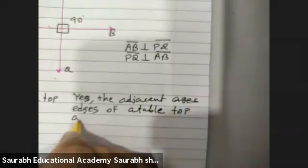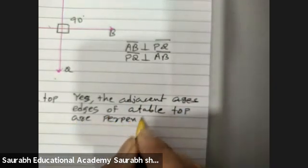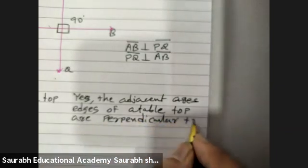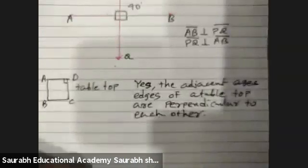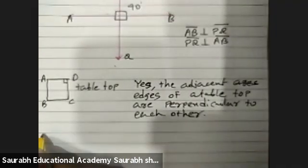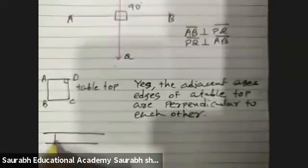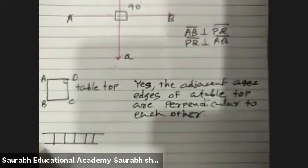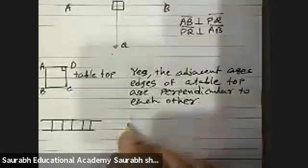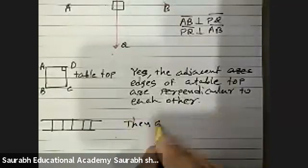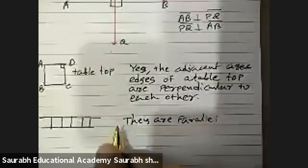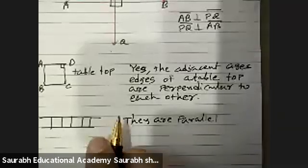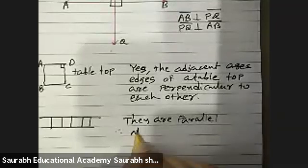First question: table top. Second question: the lines of railway track. Now this is a railway track. Can we say these are parallel? They are parallel, therefore no, not perpendicular.